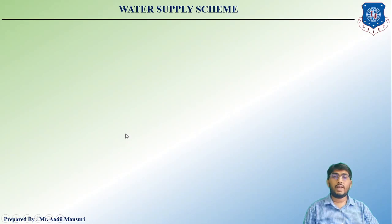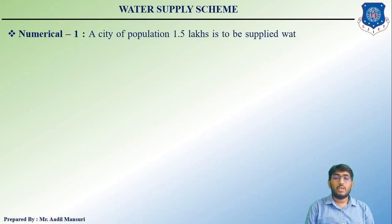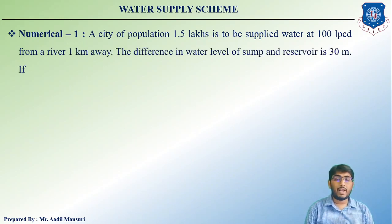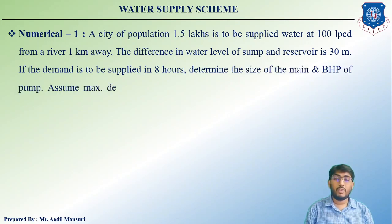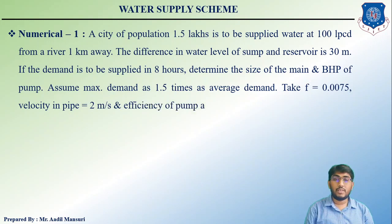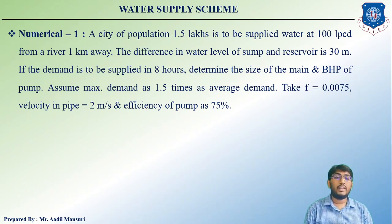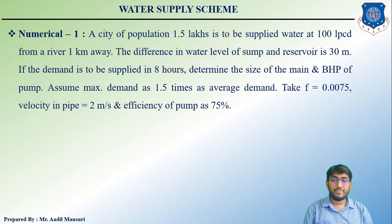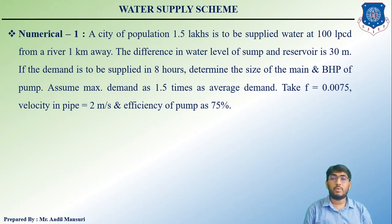The question says: a city of population 1.5 lakh is to be supplied water at 100 lpcd from a river 1 kilometer away. The difference in water level of the sump and reservoir is 30 meters. If the demand is to be supplied in 8 hours, determine the size of the main (diameter of the pipeline) and the brake horsepower (BHP) of the pump. Assume maximum demand as 1.5 times average demand, f = 0.0075, velocity in pipe = 2 m/s, and pump efficiency = 75%.